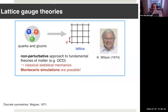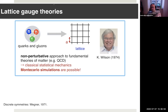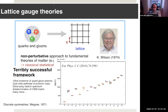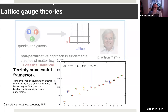Lattice gauge theories were introduced first in the 1970s, most prominently by Ken Wilson. The idea at the very beginning was very simple: to have a non-perturbative formulation to attack the theory of strong interactions — both in terms of regularization, where the lattice provides a natural cutoff, and in terms of computation, in particular Monte Carlo simulations. This has been a field which has been tremendously successful.